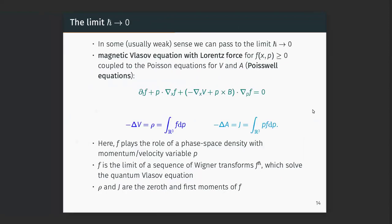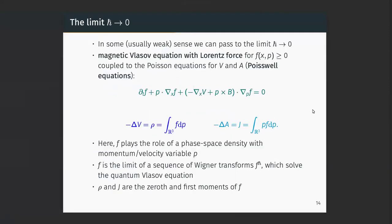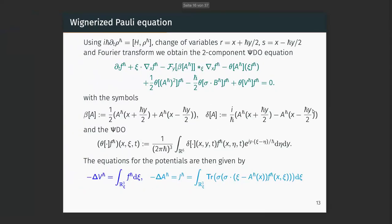To pass to the limit, you work in a weak/distributional sense. You arrive at a magnetic Vlasov equation with a transport term and a Lorentz force — the gradient of (B cross p) plus (B cross v). In the Schrödinger-Poisson case there is no magnetic term. Also new compared to Schrödinger-Poisson is the equation for A. In the classical limit, f is positive — it's a phase-space density, the limit of the Wigner transforms — with density as the zeroth moment and current density as the first moment.